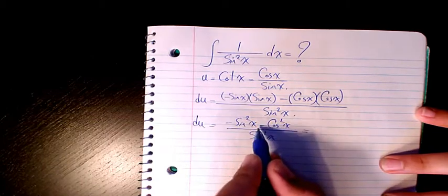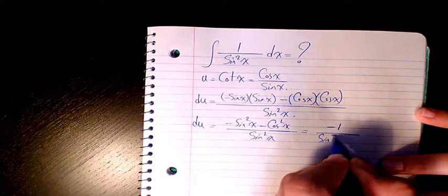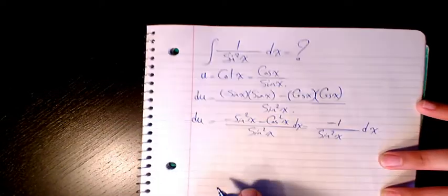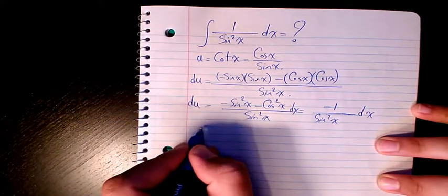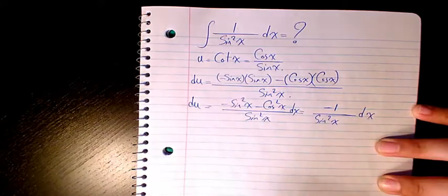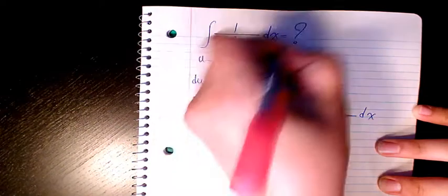negative sine squared minus cosine squared is negative 1. So du is negative 1 over sine squared x dx. As you see here, negative du is gonna be what we see in the original integral.